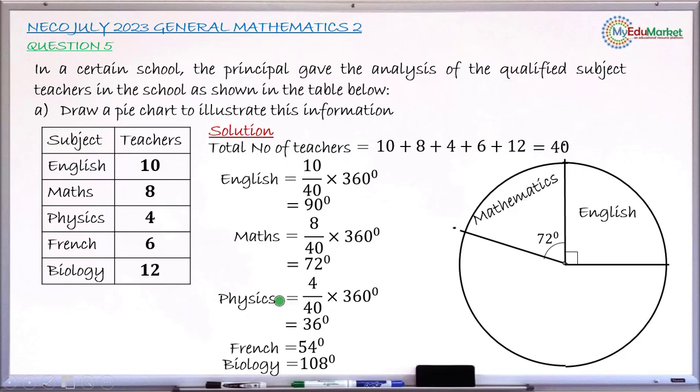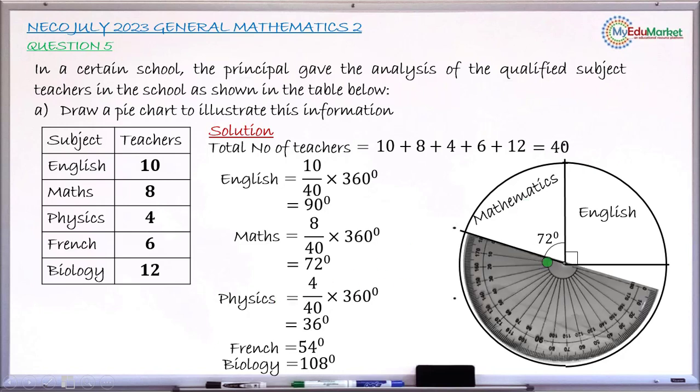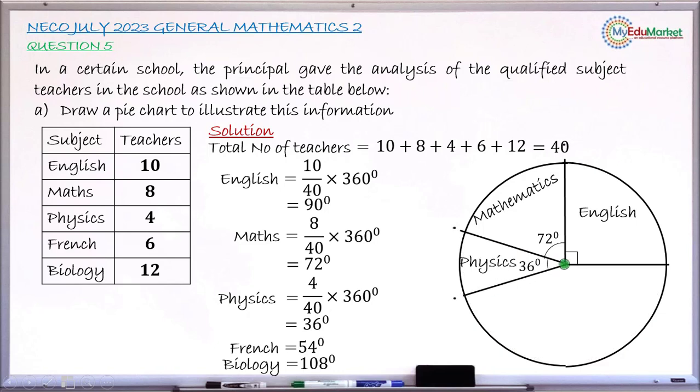So next is the Physics. Put your protractor again back and measure this angle 36. 36 will be somewhere here. After 30, count 6 small divisions there. You make a dot. Then you remove the protractor and draw a line from the middle to this very point. This is Physics angle 36 degrees.